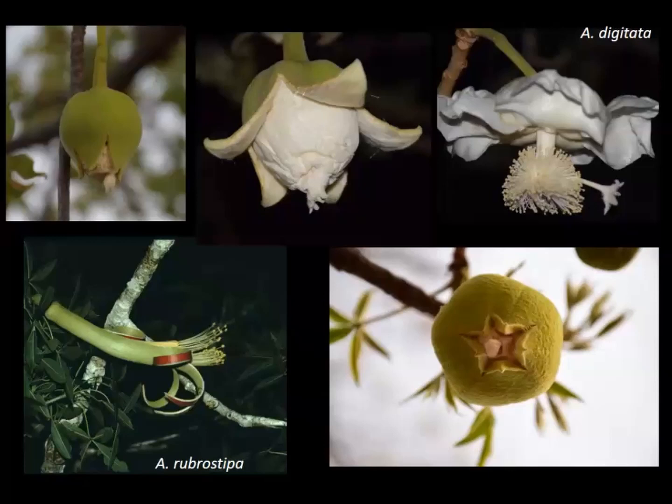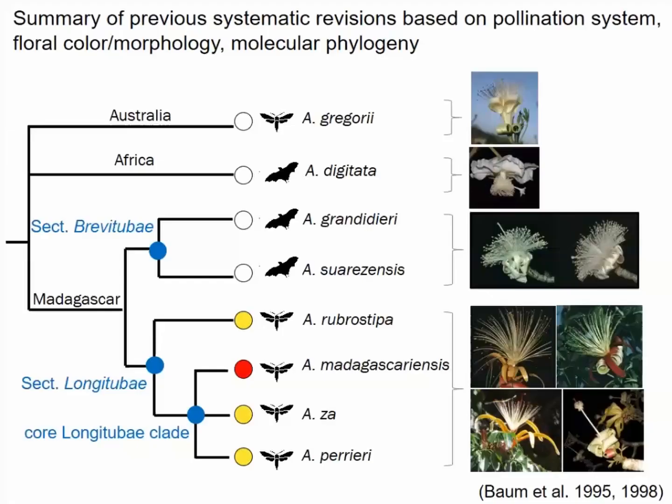The flowers only have that single night to be pollinated. By early the next morning they are already wilting and falling from the trees. Since trees produce hundreds of flowers at a given time, it literally feels like it's raining baobab flowers on you.